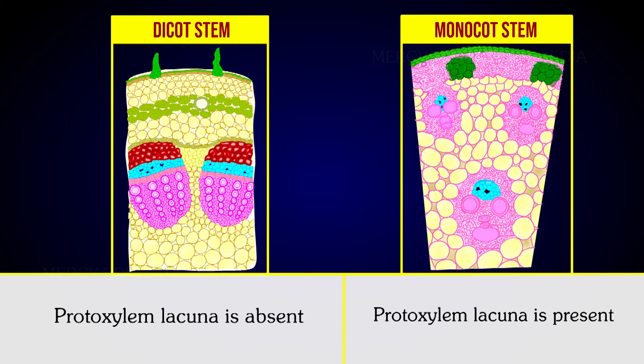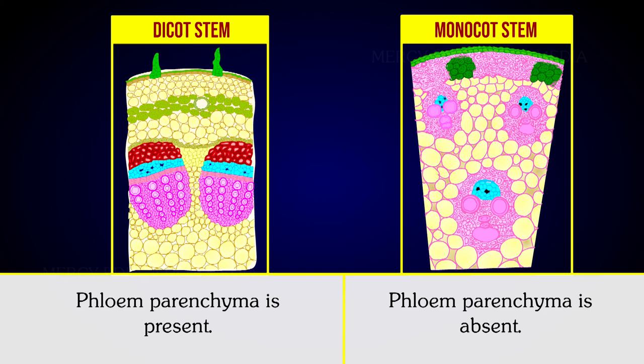In dicot stems, phloem parenchyma is present. In monocot stems, phloem parenchyma is absent.